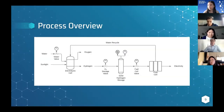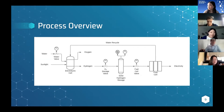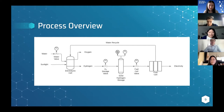Here's a simple process flow diagram for our overall process. You can see water and sunlight going into our electrolysis cell where hydrogen and oxygen gases split. We take the hydrogen to storage and then send it to the fuel cell, with a water recycle stream included. This overview gives us a clear image of our overall process, and we're also hoping to run it in process simulation.